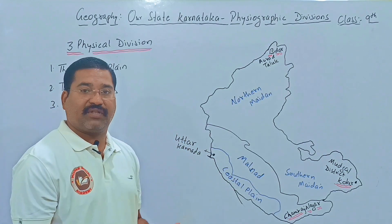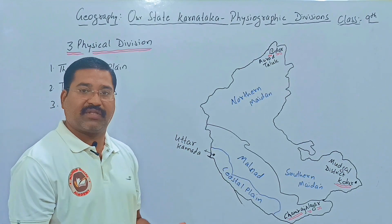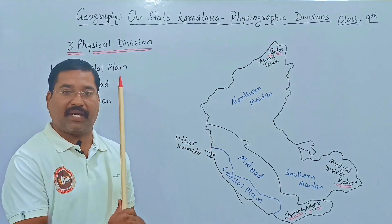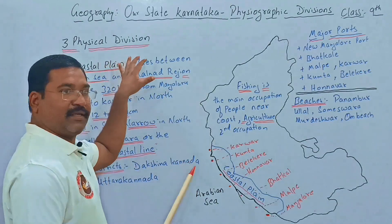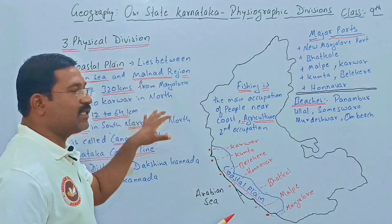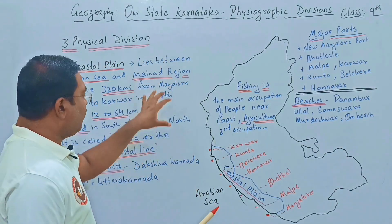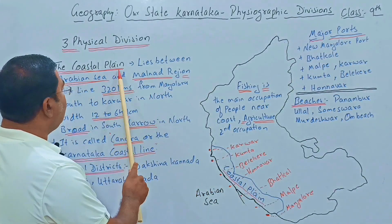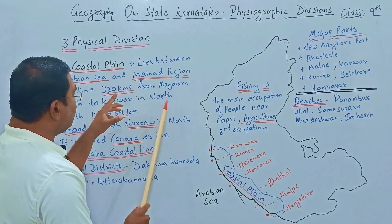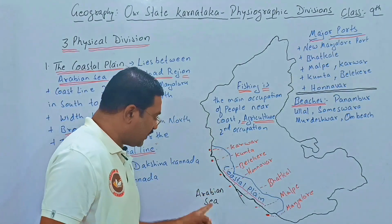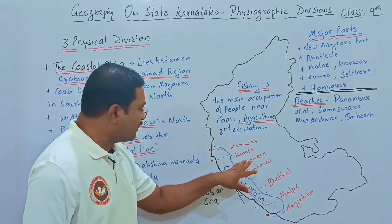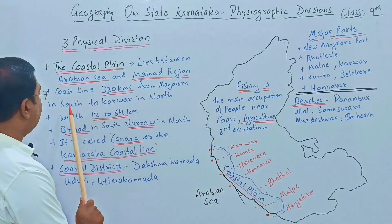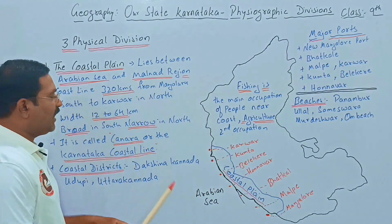Let us now understand the first physical division called the coastal plain. The coastal plain lies between the Arabian Sea and the Malnad region. You can easily see the Arabian Sea and the Malnad area as the second layer on the map.